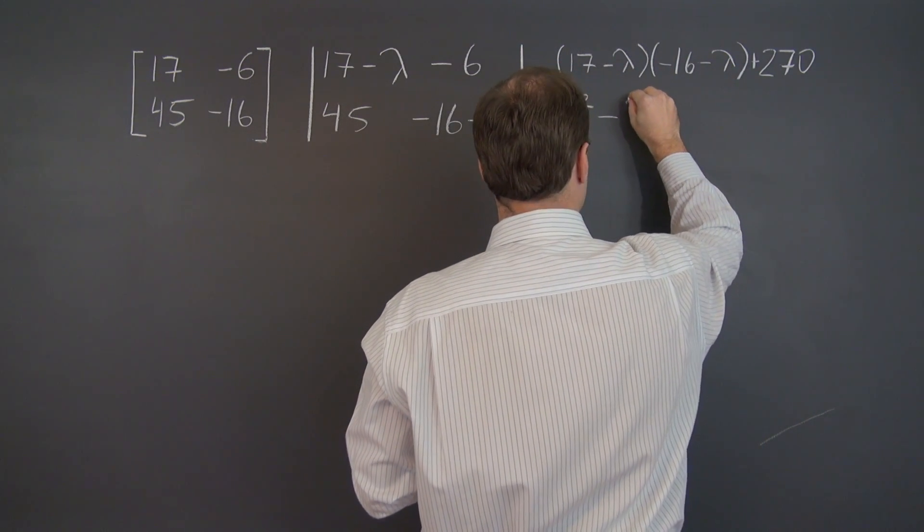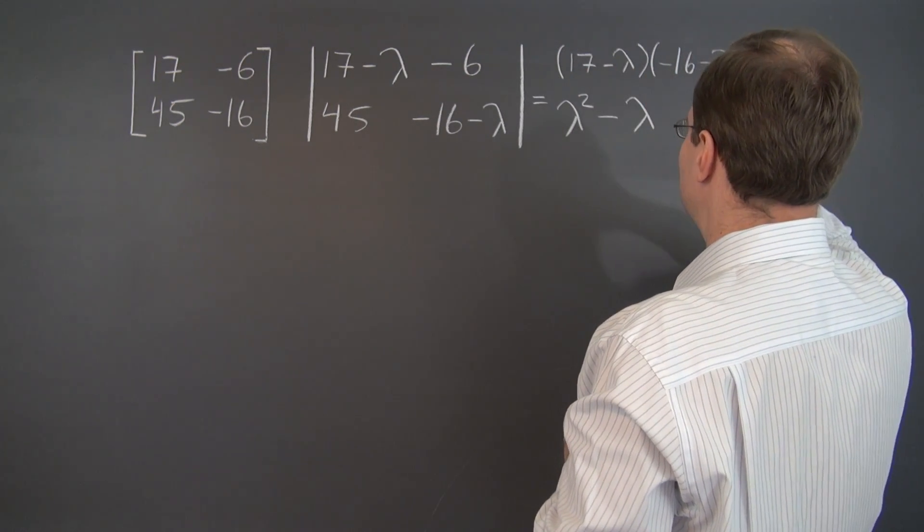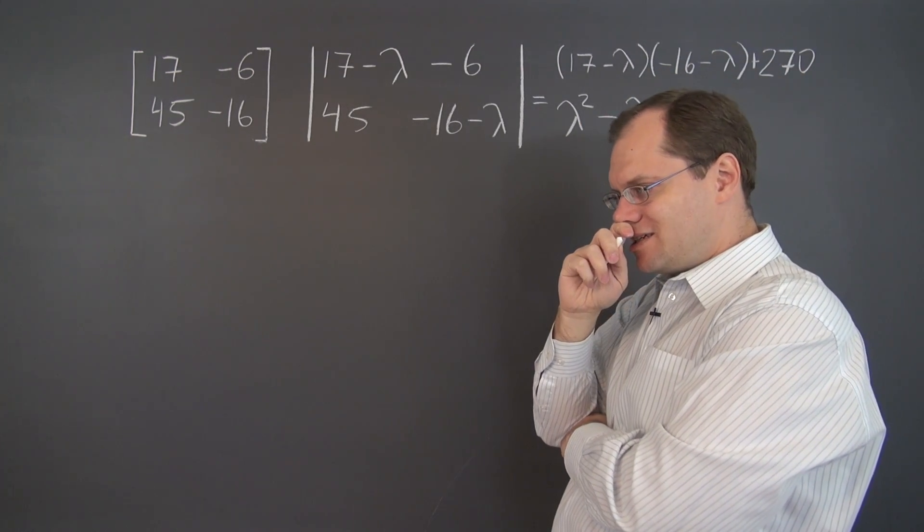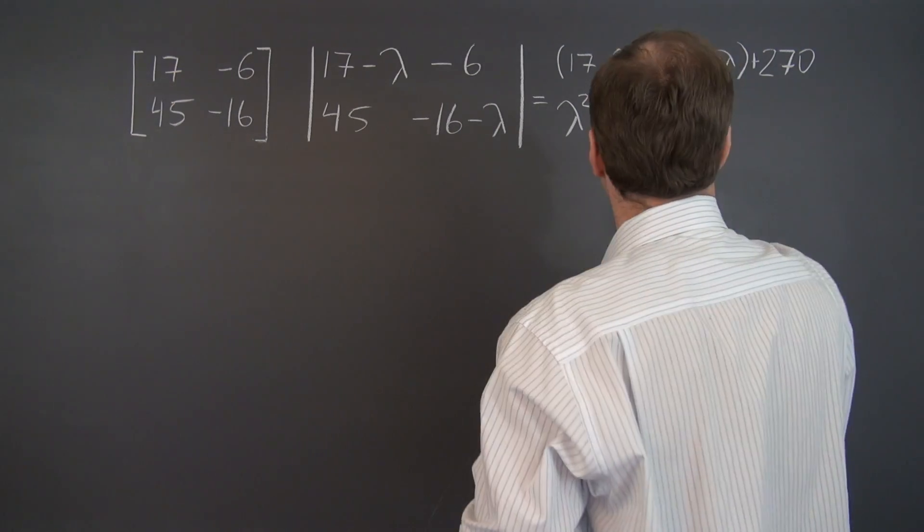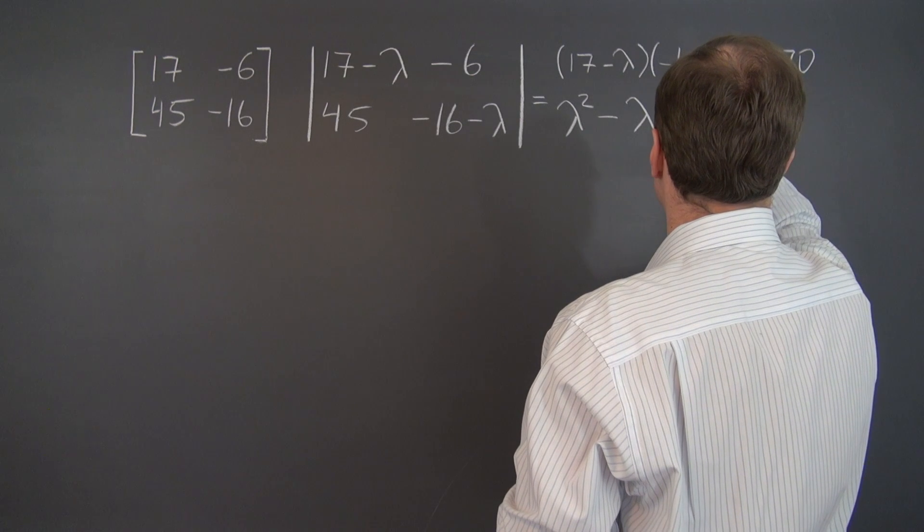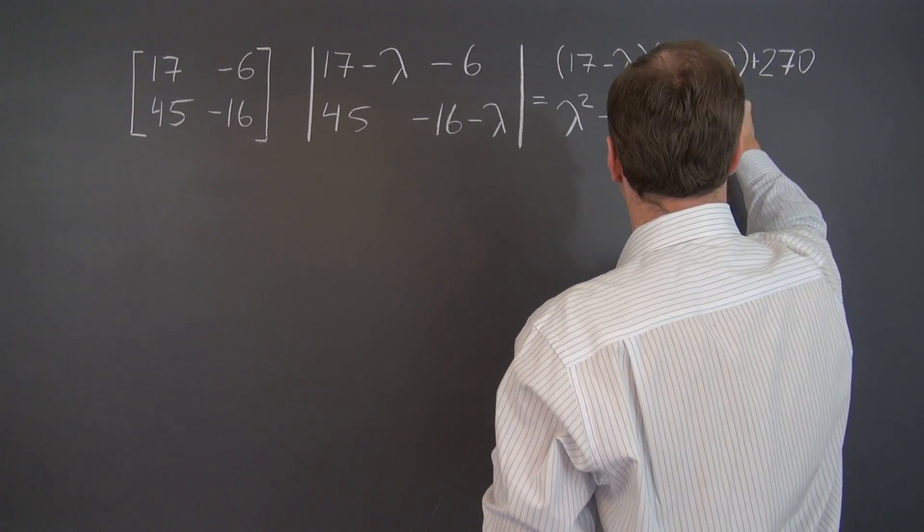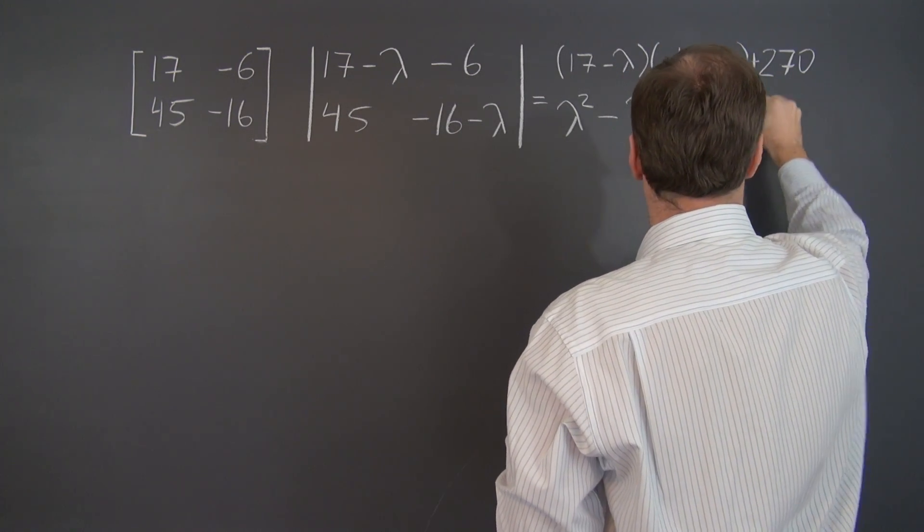We get λ² minus 17λ plus 16λ. So the net is minus λ, pretty good. And the free term is 17 times minus 16. Oh boy. What have I done? 17 times 16 is 272. So it's minus 272 plus 270, which equals minus 2. Very simple characteristic equation and it must equal zero.